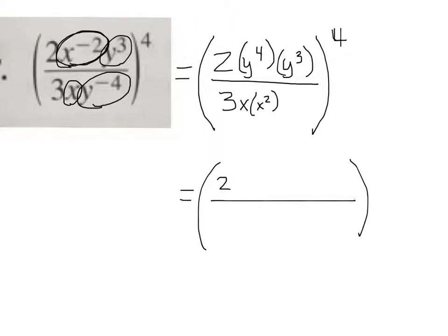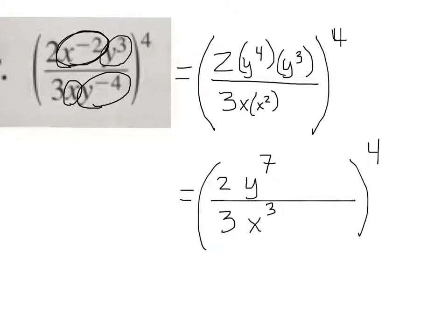I've got 2 over 3. You can see that y to the fourth times y cubed — when you multiply like bases, what do you do with their exponents? Add. So it's going to be y to the seventh. Over x to the — the exponent on this x is 1, and this exponent is 2, so 1 plus 2 is x to the third. So I've simplified everything inside the parentheses, and now I need to raise it all to the fourth power.